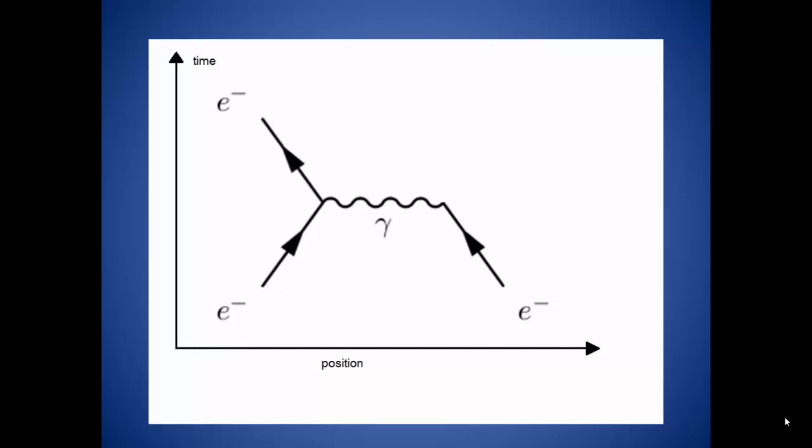Particles are still obeying the law of conservation of momentum at this point, so releasing this energy causes the electron to change directions. The photon is absorbed by the second electron, and because of the conservation of momentum, the second electron will change its direction as well.